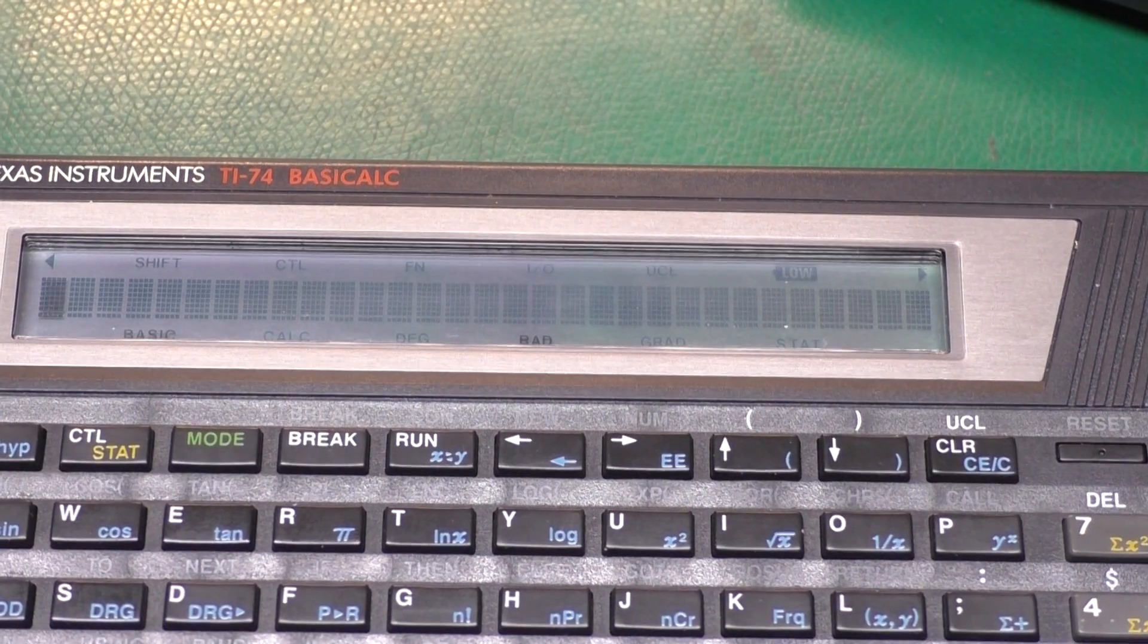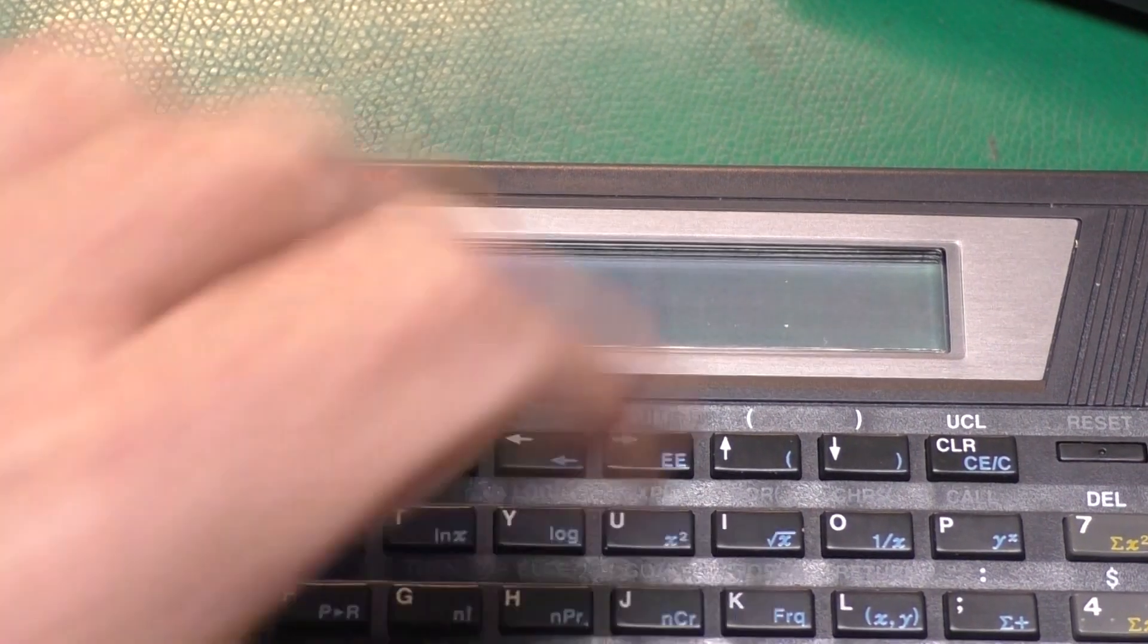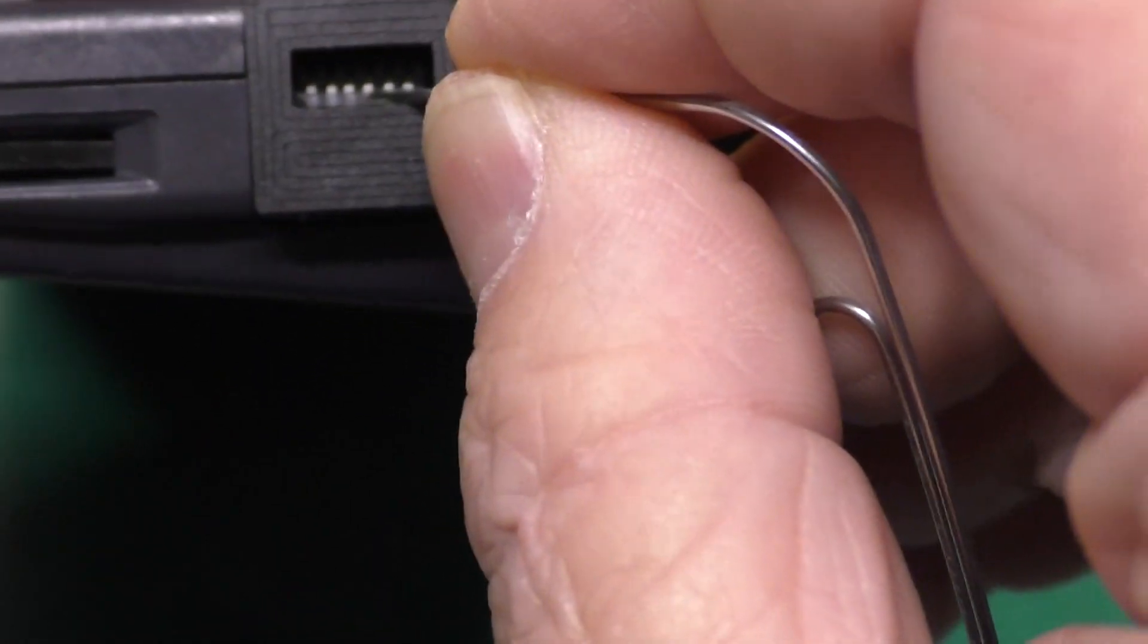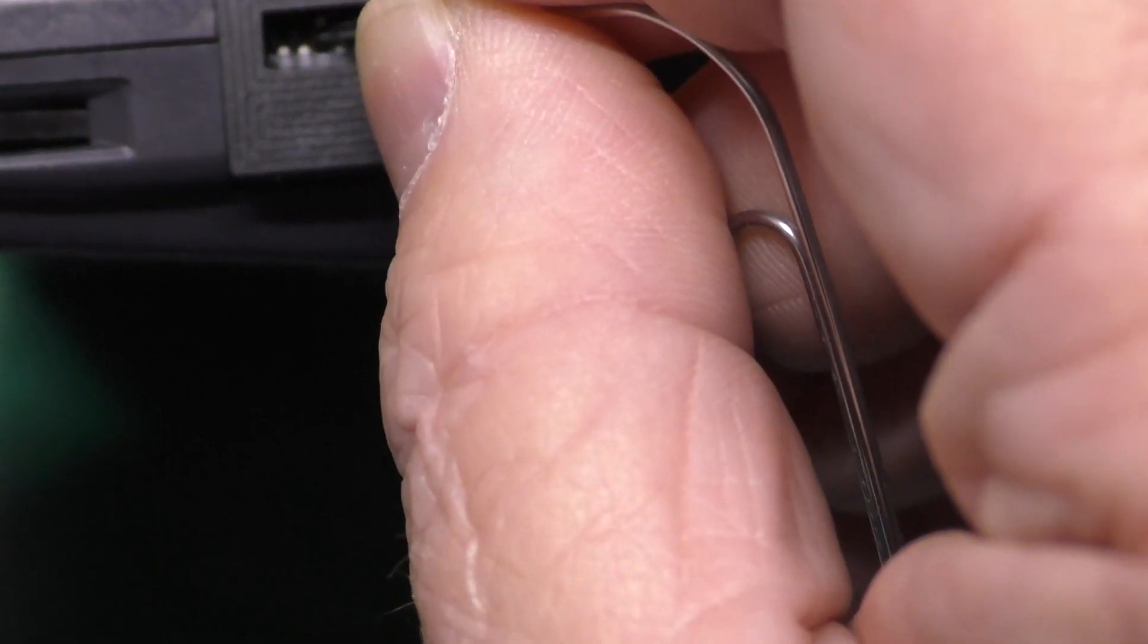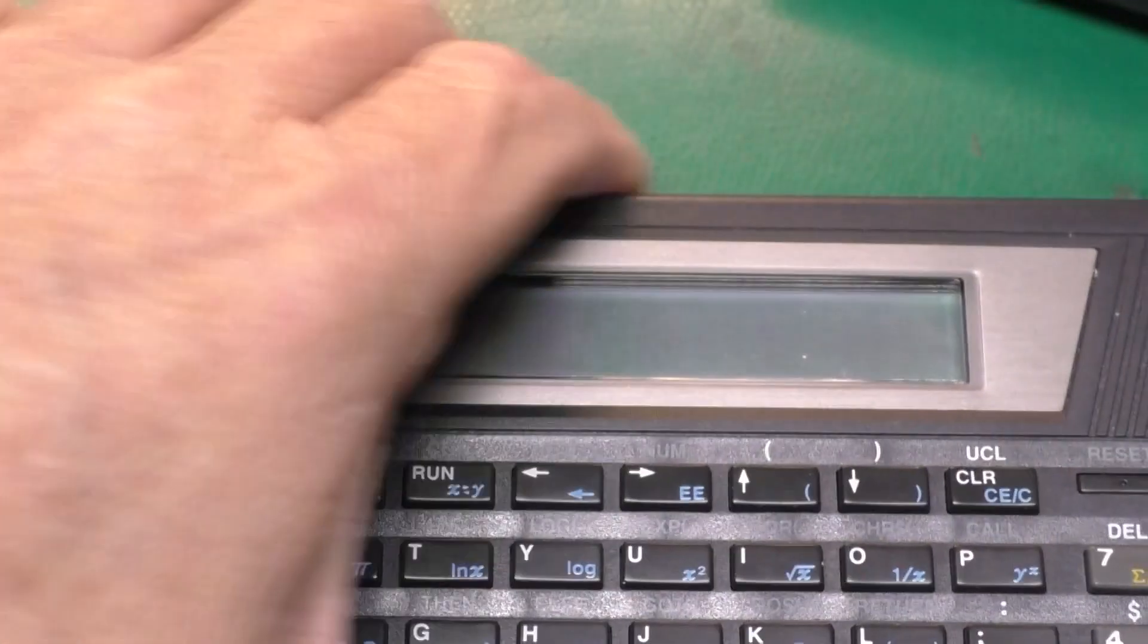Now there is a third way, or a second way I guess, to use the cartridge. I'm going to turn that off again and I'm going to select bank 2.